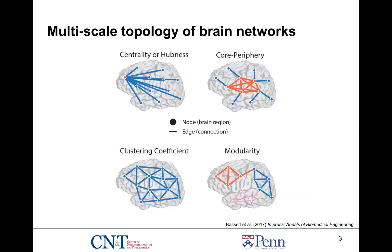When we examine the topology of brain networks, we can look over multiple scales. At the finer scale, we can observe the importance of every individual node in the network, also known as the centrality or hubness of a node. In orange, you have a node that's extremely influential amongst all of the other blue nodes — it's strongly connected to each one of them. You would call the orange node a very central node in the network.